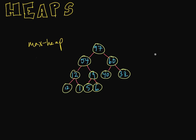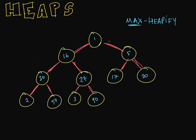An example of a max heap would be like this — each child node is less than or equal to its parent node. So let's do an example. Let's try to make this a max heap using our function max heapify. The idea is that we're going to go from each subtree, starting from the bottom subtree and heapify it, then go to the next one and heapify that subtree, and so on.